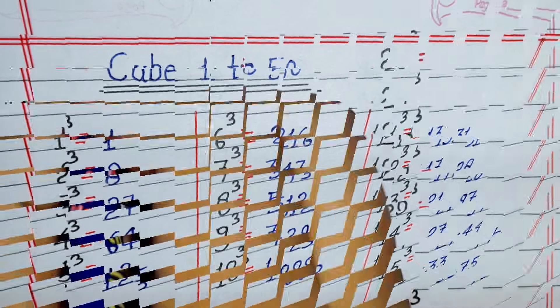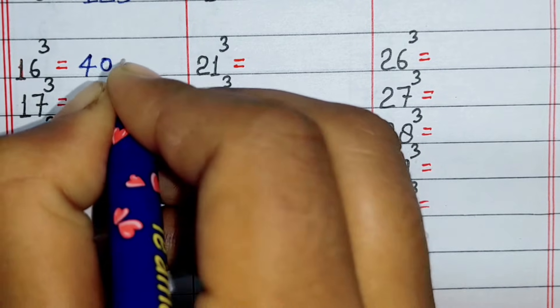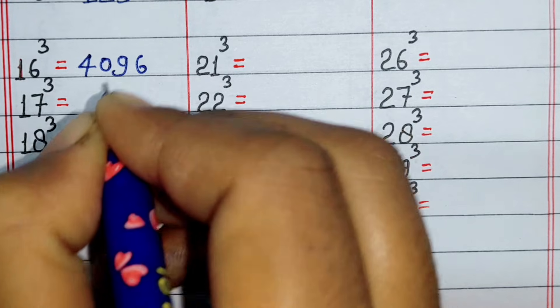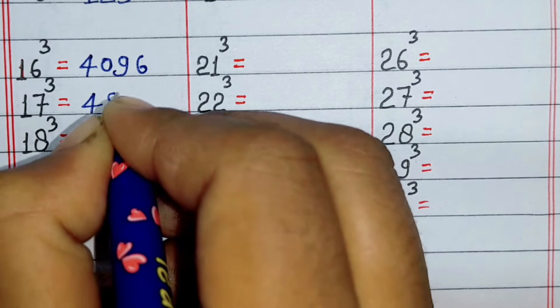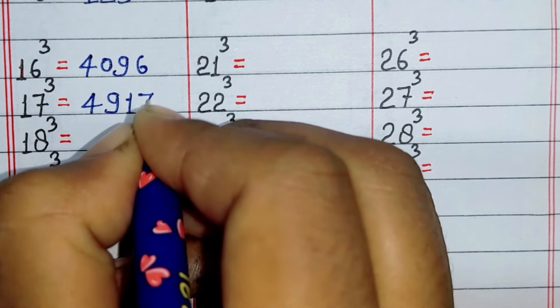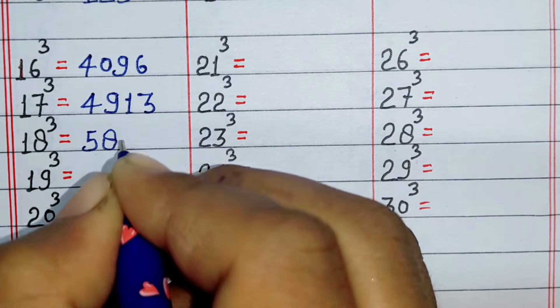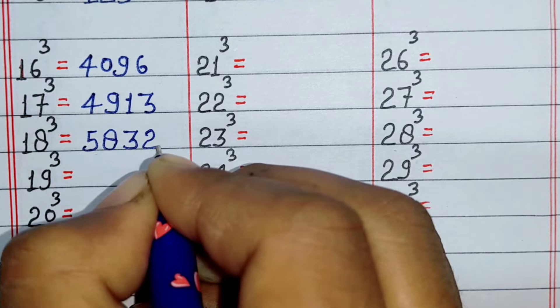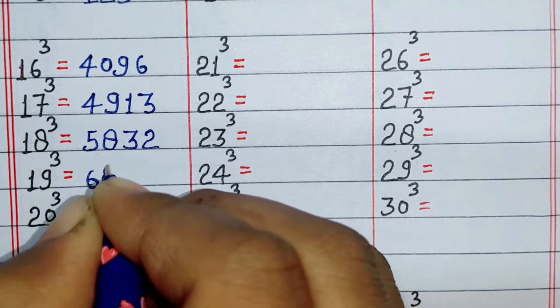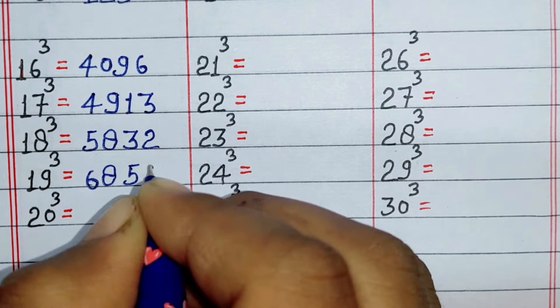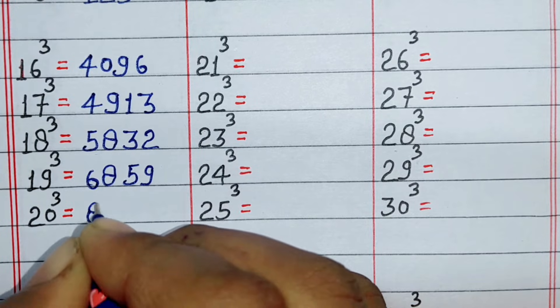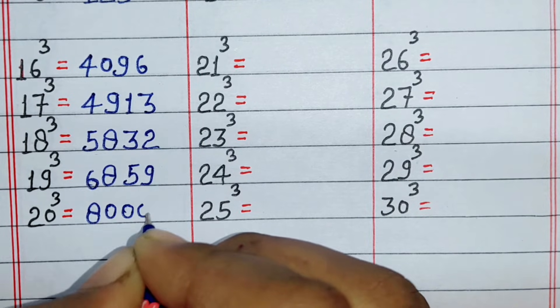Cube of 16 is 4096, cube of 17 is 4913, cube of 18 is 5832, cube of 19 is 6859, cube of 20 is 8000.